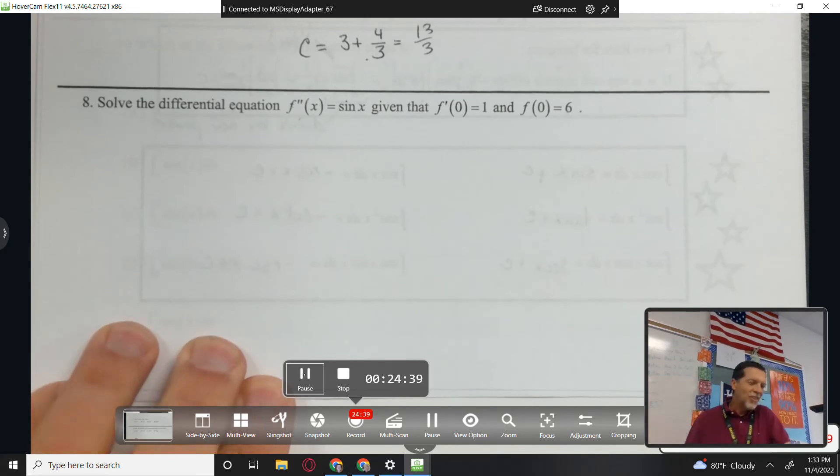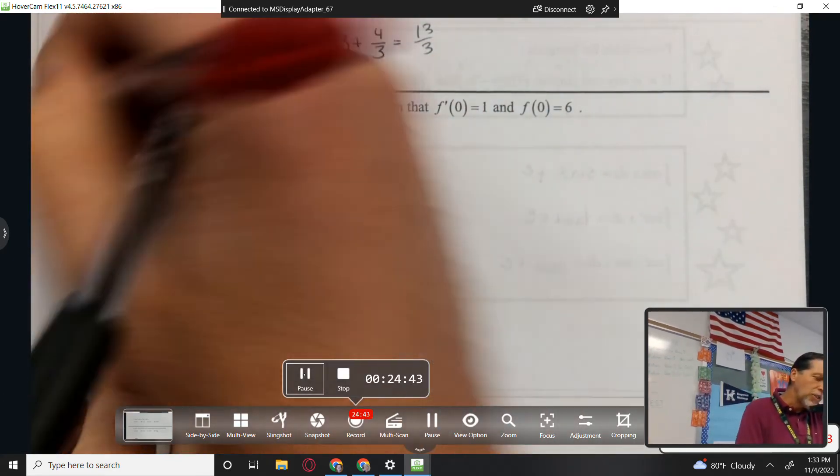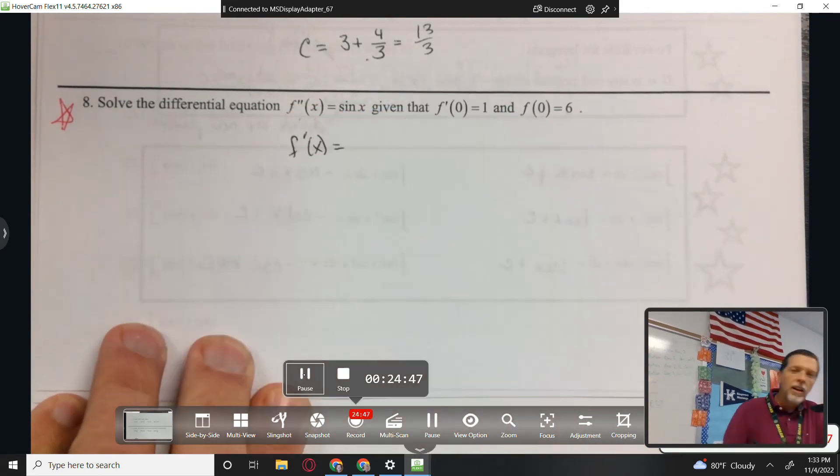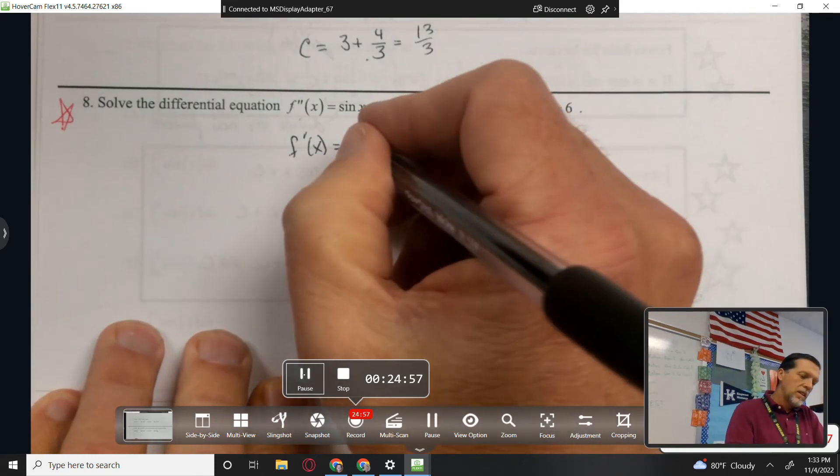Number 8. So what is the... okay, pay attention to this one because this one, I'll try to show you where people mess up. All right, so I need to back up one spot. Somebody took a second derivative and landed at sine. So what was the first derivative? What's one step backwards from sine? Negative cosine of x. Negative cosine of x plus c.